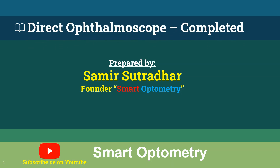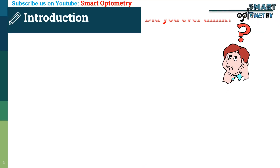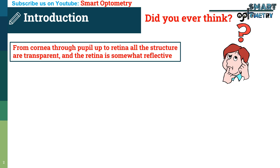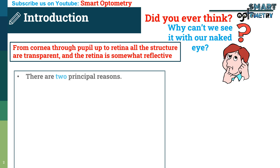Today I will discuss the direct ophthalmoscope. Did you ever think: from cornea through pupil up to retina, all structures are transparent, and the retina is also somewhat reflective — so why can't we see it with our naked eye?